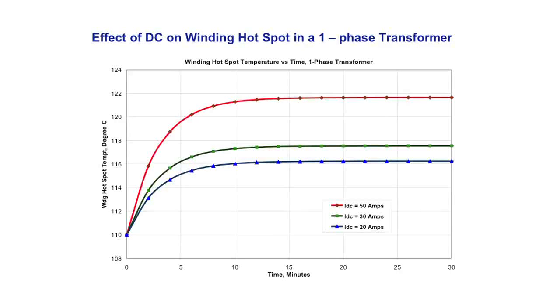If you apply DC to a transformer, you get the high magnetizing current with harmonics, causing higher losses in the winding and structural parts, and if left on, the temperature increases. The starting point of 110 degrees is what is allowed by standards for the hot spot in the winding. Applying DC currents to the transformer, this is how the hot spot temperature increases over time.